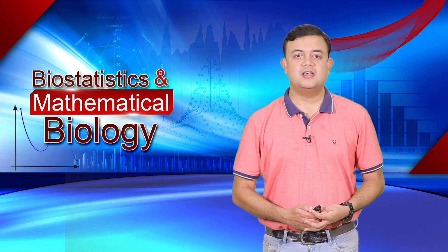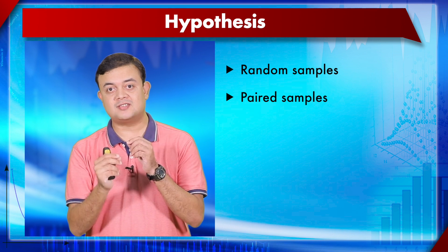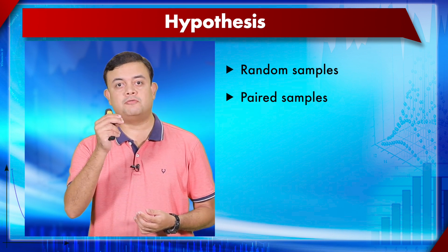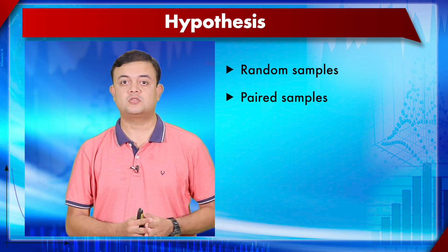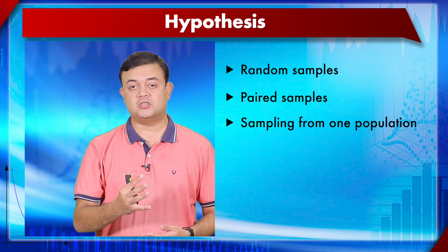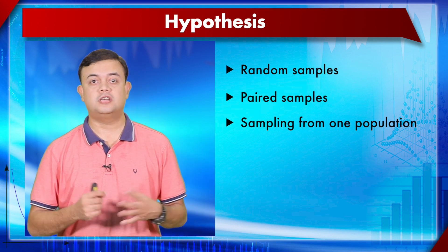Before performing Pearson's correlation, there are ten assumptions. This test is highly parametric, so if these assumptions are violated, you cannot use it. First: random samples. Second: paired samples — each x value has a corresponding y measurement, for example blood pressure and blood glucose for the same subject. Third: sampling from one population, not multiple populations with different distributions.